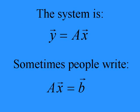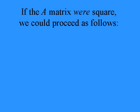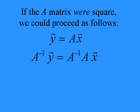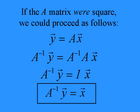Sometimes people write this as Ax equals B. If the A matrix were a square matrix and had an inverse, we could proceed as follows: y equals Ax, pre-multiply both sides by A inverse. A inverse A is just the identity matrix. So A inverse times y would give the desired x vector.